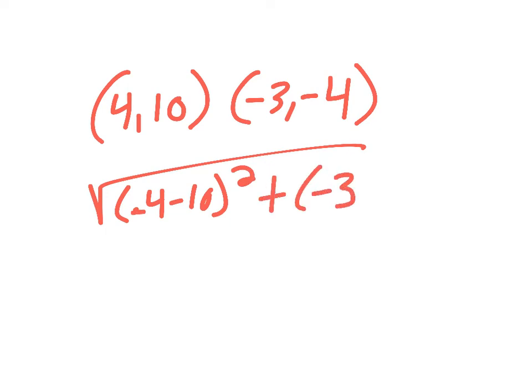Plus, same thing with the x coordinates, so negative 3 take away 4, I'll square it, I'm going to add them together, and then finally square root.